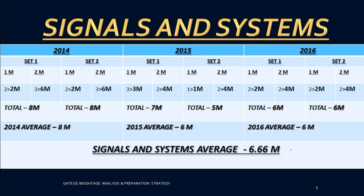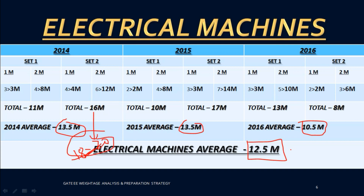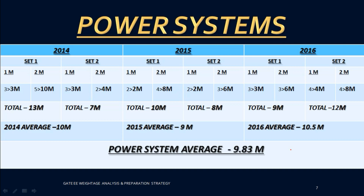The next subject is Electrical Machines. In 2014 it was 13.5 marks, and this is the subject with the highest weightage for GATE Electrical Engineering. The average is around 12.5 marks, and in some sets total marks were 18 to 20. Even in 2017 you may get 20 marks from Electrical Machines. This is the most important subject — prepare it first with 100 percent efficiency.